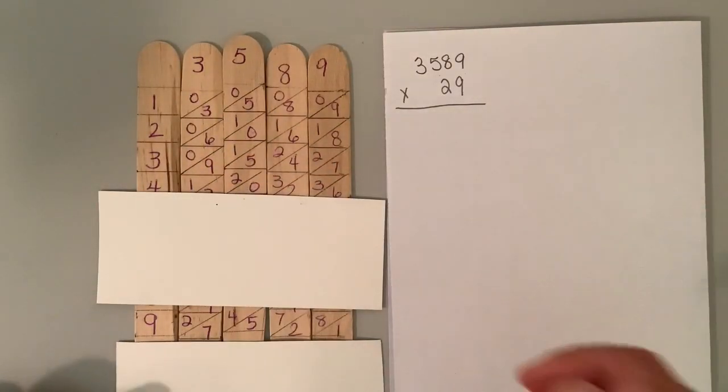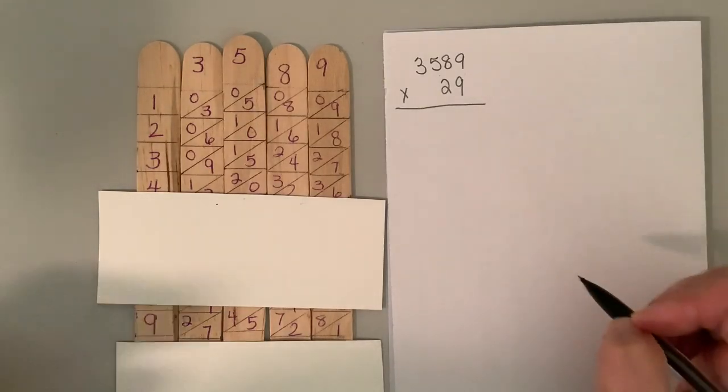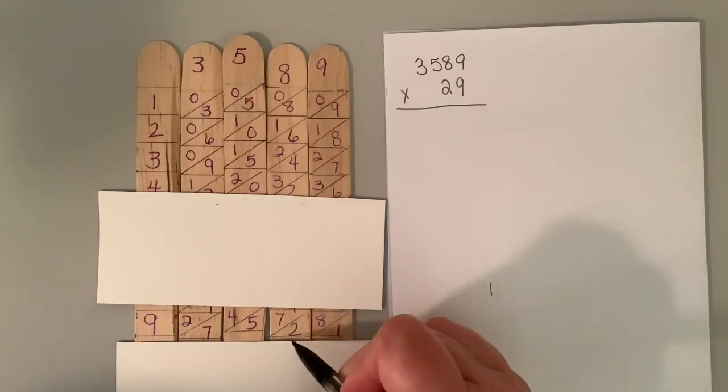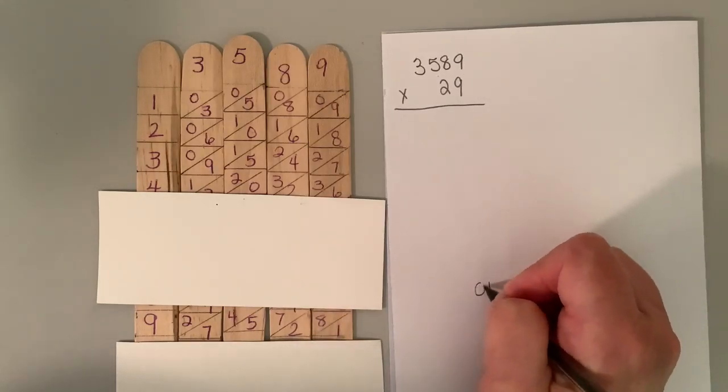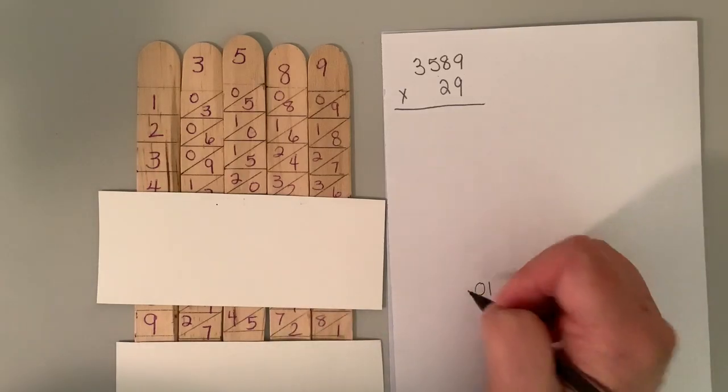So multiplying by nine, I'm just going to put it down here. I've got one, two, or two plus eight is 10. So I'm put a zero, carry the one, five and seven is 12 plus one is 13.